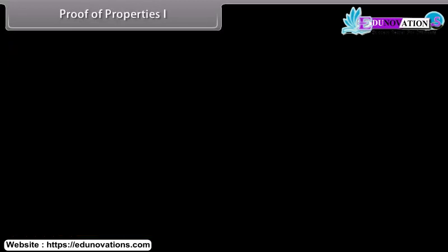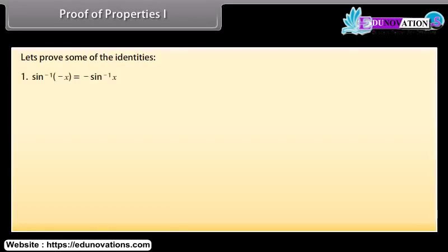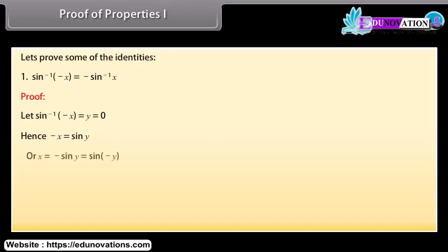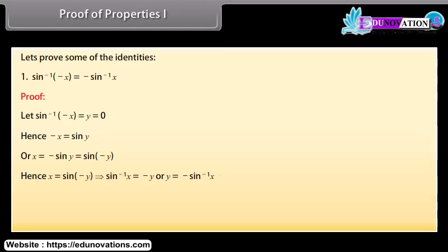Let's prove some of the identities. First, sin⁻¹(−x) = −sin⁻¹ x. Proof: Let sin⁻¹(−x) = y. Then −x = sin y, so x = −sin y = sin(−y). Hence sin⁻¹ x = −y, i.e., y = −sin⁻¹ x. Similarly, the corresponding identities for tan and cosec can also be proved.